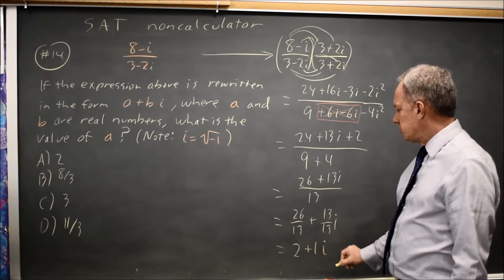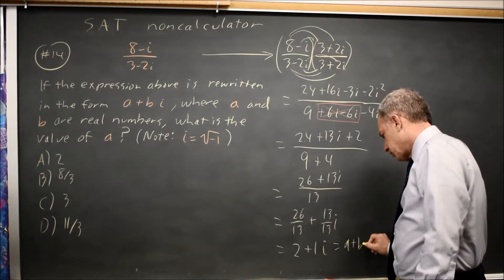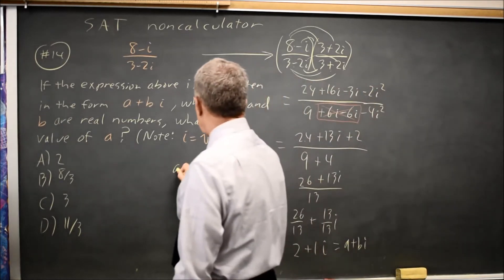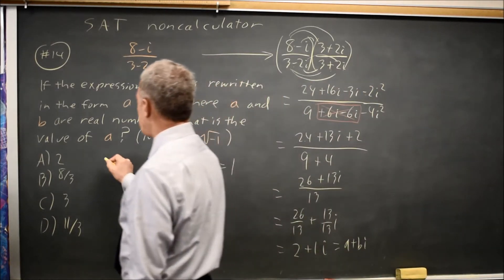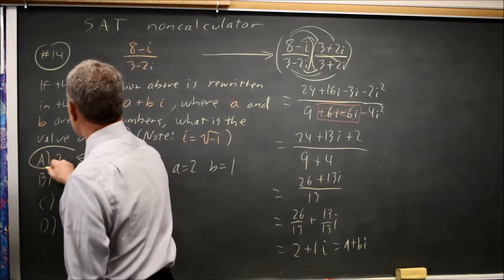So a equals 2. A equals 2 and b equals positive 1. They're asking for a, so that is choice A.